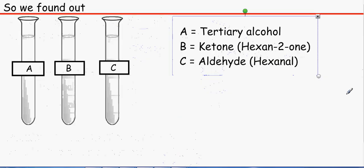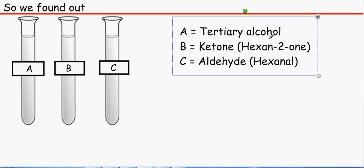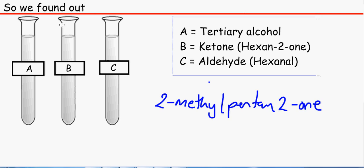So overall, we know that A is a tertiary alcohol. We can call it 2-methyl pentan-2-ol. B is a ketone, hexane 2-one. And C is an aldehyde hexanal. And that is it for this investigation.